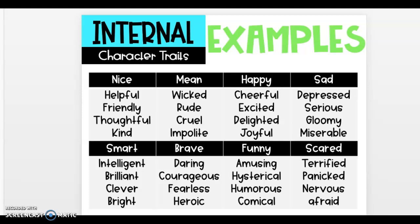Here are some internal character trait examples. For nice, you could say helpful, friendly, thoughtful, or kind — using synonyms rather than just saying the person is nice. For mean, you could say wicked, rude, cruel, or impolite. If the person is happy, instead of saying happy, you could say cheerful, excited, delighted, or joyful. If the person is sad, try depressed, serious, gloomy, or miserable. Go ahead and pause this to read the rest on your own.